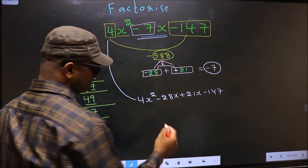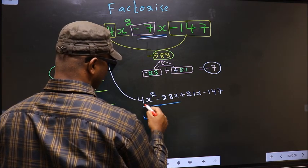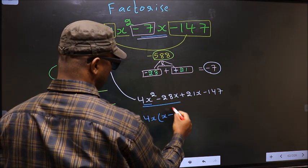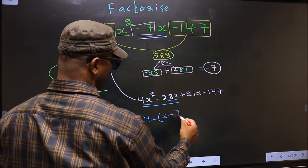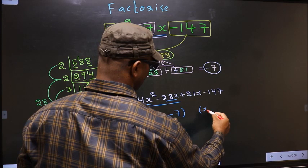Next. From these 2 terms, what can be taken out common? 4x. So here you get x - from this 4x out you get 7. Now whatever you got here, here also you should get the same thing.